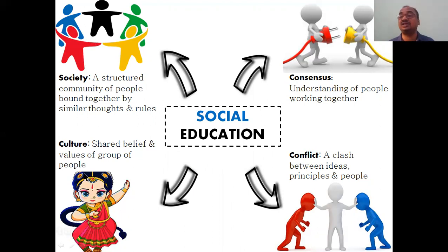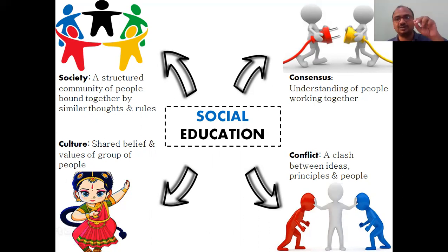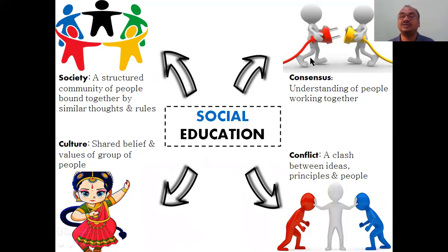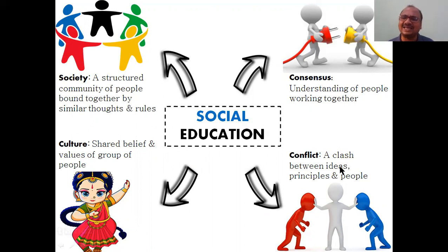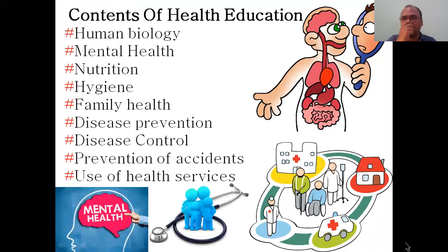Social education gives you understanding of four things: society, culture, conflict, and consciousness. Culture is the shared beliefs and values of a group of people — you must respect your own culture and others' culture too. Consciousness means cooperating together. Conflict is a clash between ideas, principles, and people — avoid conflict. Understanding means people working together, which is the basic need.